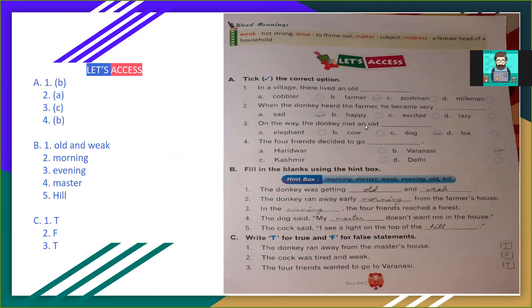On the way the donkey met an old dog. Third answer is C. Fourth, the four friends decided to go Varanasi. Fourth answer is B. Now we will fill in the blanks using the hint box.